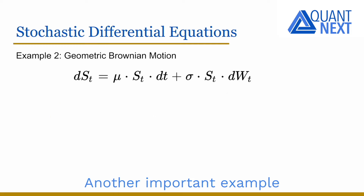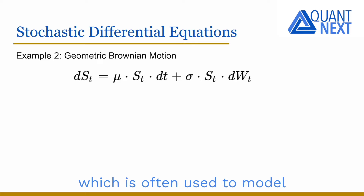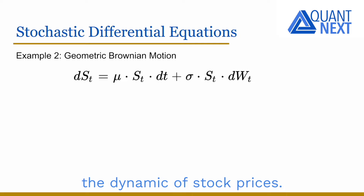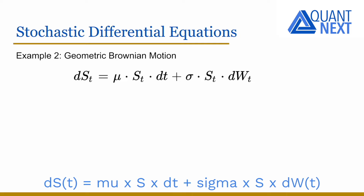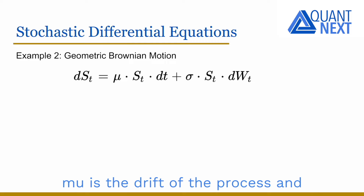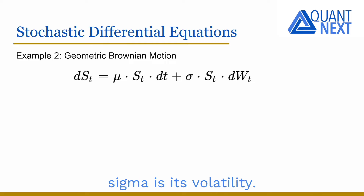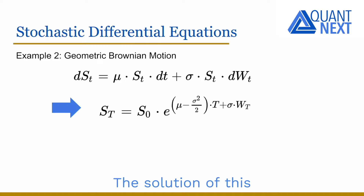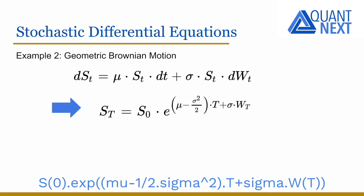Another important example in finance is the geometric Brownian motion, which is often used to model the dynamic of stock prices. dS_t is equal to mu times S times dt plus sigma times S times dW_t, where mu is the drift of the process and sigma is its volatility. The solution of this stochastic differential equation is S_t equal to S_0 times the exponential of (mu minus the square of sigma divided by 2) times t, plus sigma times W_t.